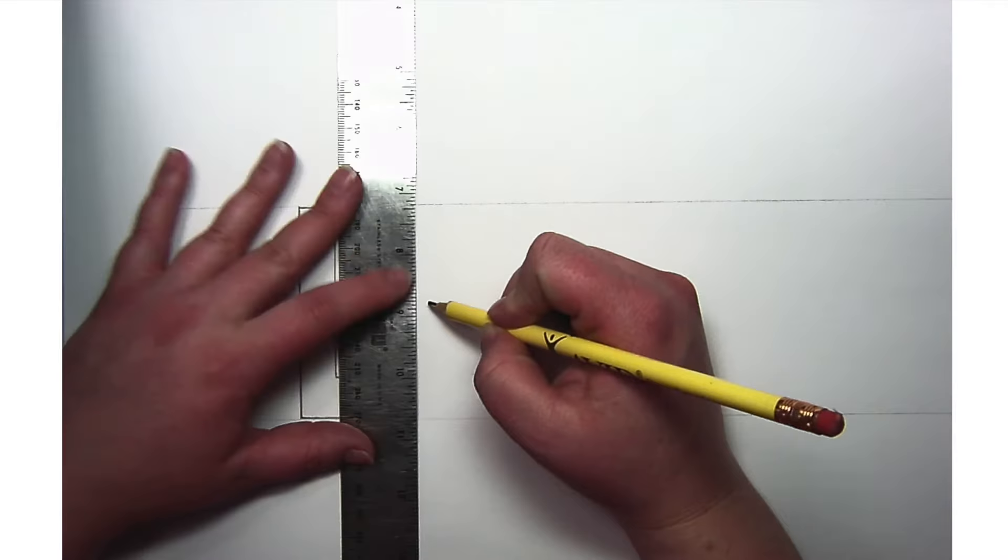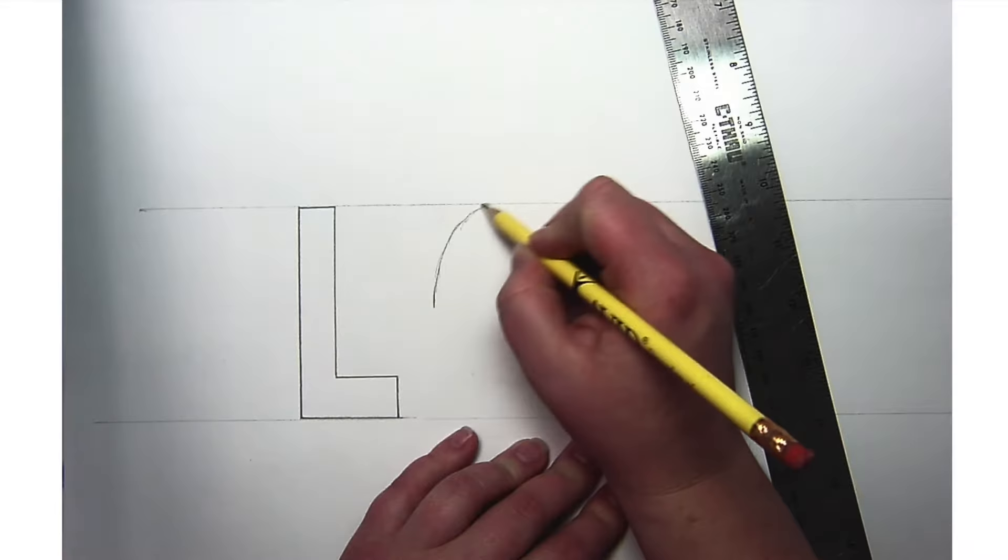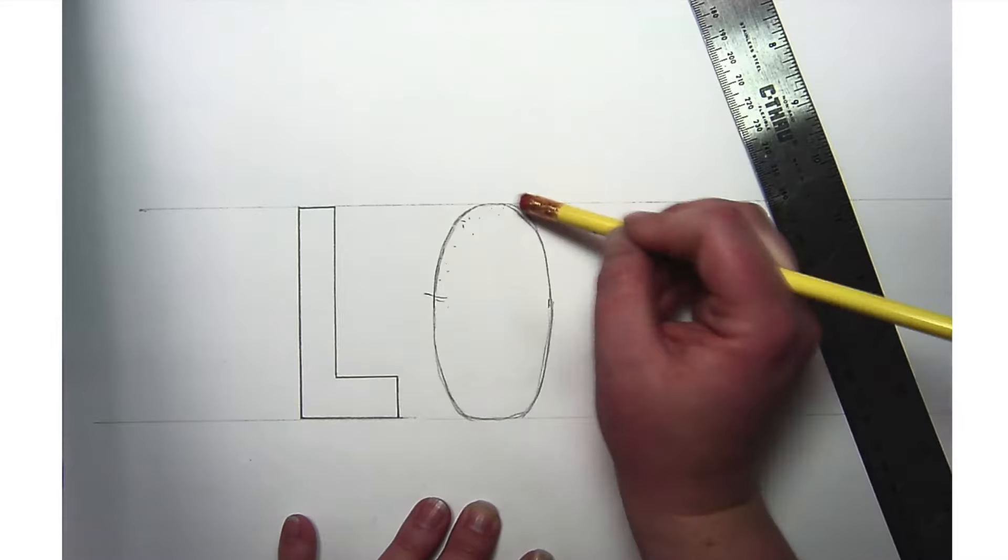Then I'm going to create two little dash marks for the O to decide where the sides are, and then I'm making an oval that reaches all the way up to the top guide and down to the bottom line. I'm going to create the inner oval to make that O.